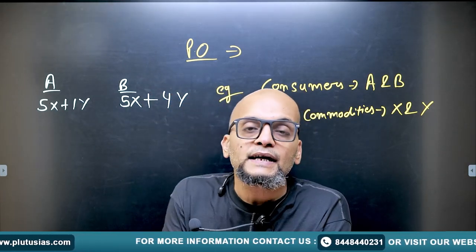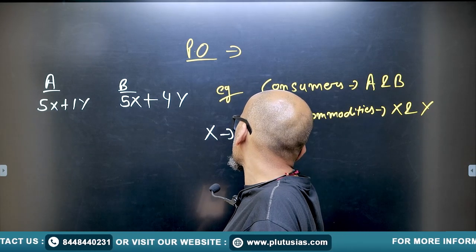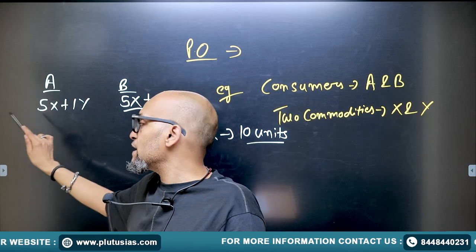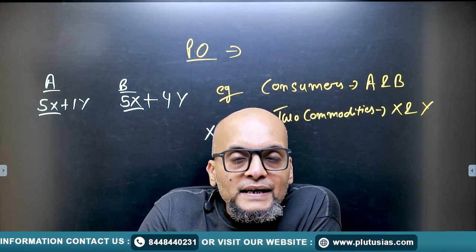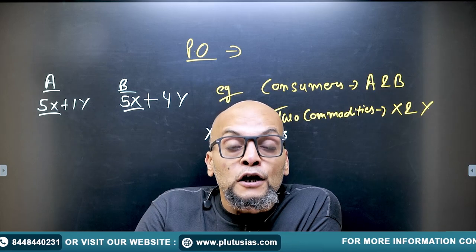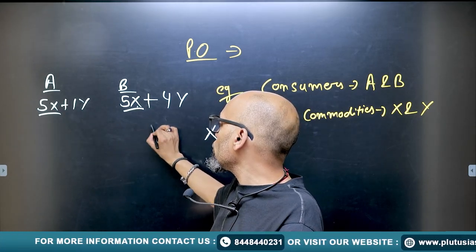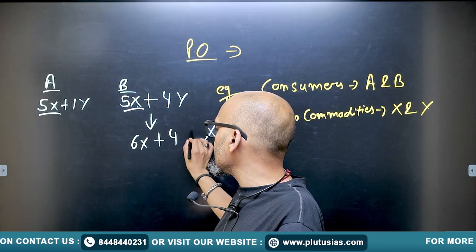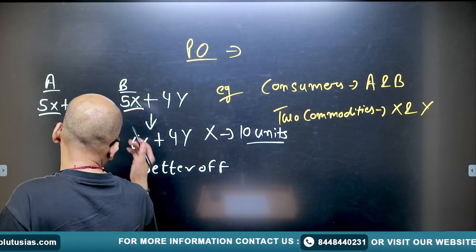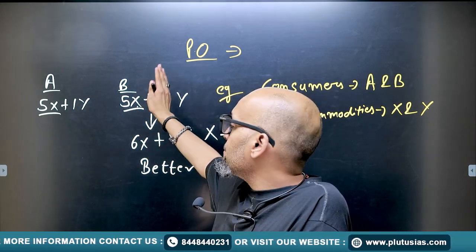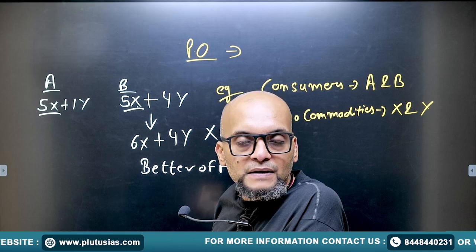Now, with 10 units of commodity X to distribute, A consumes 5 units and B consumes the rest. If A is made better off, and B's consumption function was initially 5X plus 4Y, it becomes 6X plus 4Y — so B is moved to a better off state. But if B is now consuming 6 units of X, that means A's consumption of X will decline.